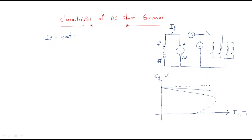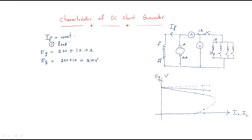When the first load is operated, assume one ampere of current is flowing. With one ampere of armature current and a voltmeter reading of 200 V, and an armature resistance of 10 ohms, the generated EMF is 200 plus 10 equals 210 volts. This is the result for only one load.